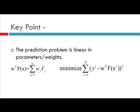The key point is that the prediction problem is still linear in the parameters w. This is your parameter vector w and this is your basis function. Your prediction problem is w transpose f(x), that is summation over all j from 1 to n of w_j f_j — so this is still a linear problem in your parameters. The underlying optimization problem is: minimize over your parameters the summation over all training instances i of (y_i minus w transpose x_i) squared. This is the error function we have to minimize.